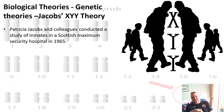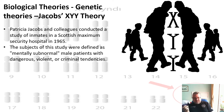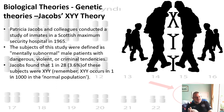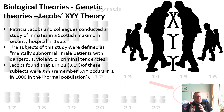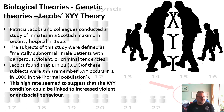So what about Jacobs's research? She and her colleagues conducted a study of inmates in a Scottish maximum security hospital in 1965. They tested for the chromosome. The subjects were defined as mentally subnormal — male patients who were dangerous, violent, or had criminal tendencies. Jacobs et al. found that one in 28, about 3.6%, of these subjects were XYY. We have to remember that XYY occurs in only one in a thousand in the normal population, so this is a major statistical difference, and this high rate suggests that XYY could be linked to increased violent or antisocial behaviour.